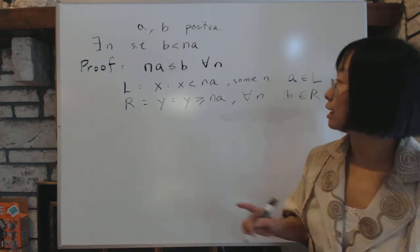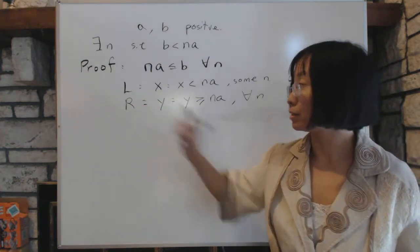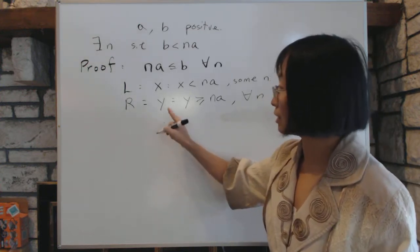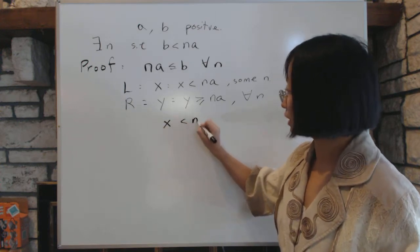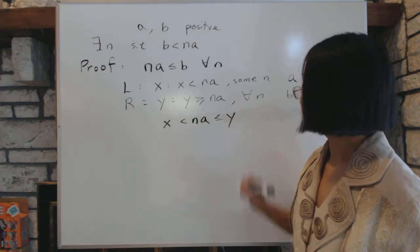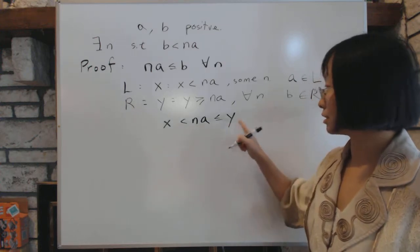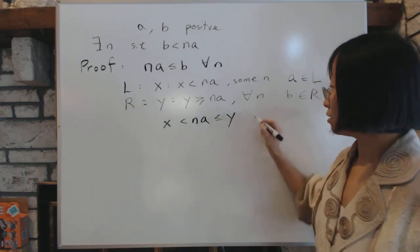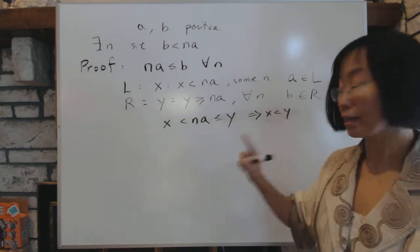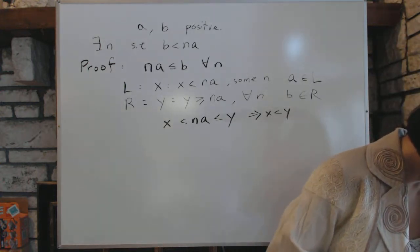And then the third condition is that the members of L have to be smaller than every member of R. So if x is in L, and y is in R, then we have this situation: x is less than NA, from there, which is less than or equal to y, because NA is less than y for all N. X is only less than some N, but this is less than, all N is less than y, which proves that x is less than y, for every x in L and every y in R.